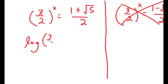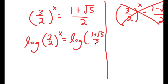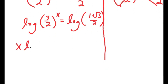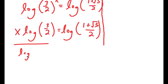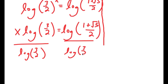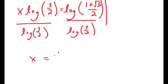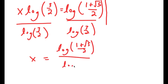To solve this, I'll take the log on both sides: log of (3/2)^x equals log of (1 plus square root of 5) over 2. This becomes x times log(3/2) equals log((1 plus square root of 5) over 2). Dividing both sides by log(3/2), I get x equals log((1 plus square root of 5) over 2) divided by log(3/2).